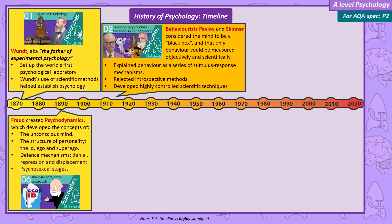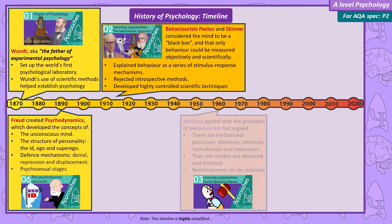Another group of learning theorists called social learning theorists agreed with most of behaviourism, but argued that when applied to human learning, we cannot ignore the fact that we have internal mental processes. Especially when you consider that humans learn not just from their own direct experiences, but from watching other people. For example, if you perform a behaviour and get a reward for it, in order for me to imitate that behaviour...